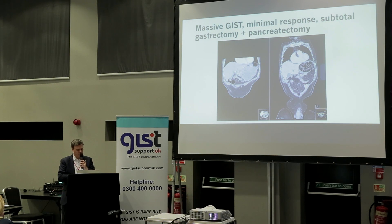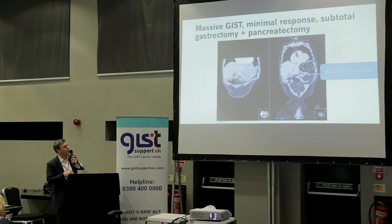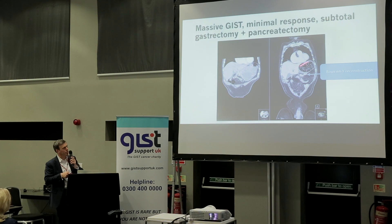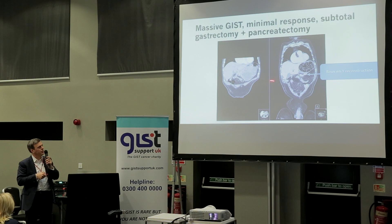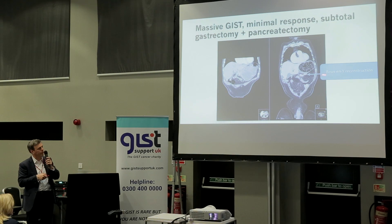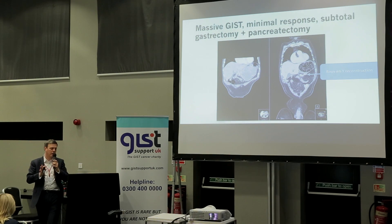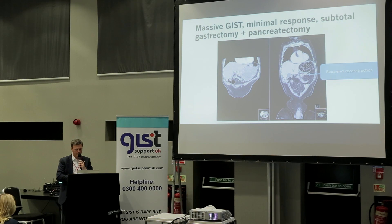Some tumours just really don't respond very well. Another massive tumour with pancreas involvement required a subtotal gastrectomy. That can be troublesome, but this patient has done very well. What you do is reconstruct the outflow tract by bringing up the bowel to do what we call a Roux-en-Y reconstruction. You still have to do these procedures sometimes, but the most important thing is that the tumour is gone and that you're well afterwards.